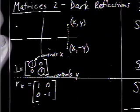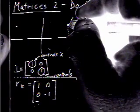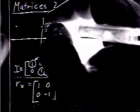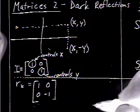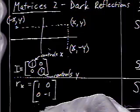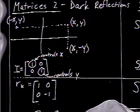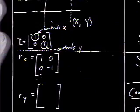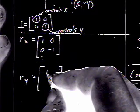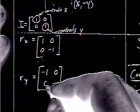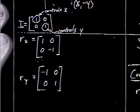Now let's go back to the point (x, y), but reflect across the y-axis to get to a point on the other side. The x value is changing but the y value stays exactly the same. So the matrix that makes that happen — where x changes but y does not — looks like this. These are two matrices you need to know.